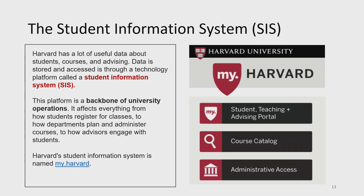The student information system — many of you might think about this as my.harvard — is where students go to do different registration operations. It's not just an interface for students, faculty, and staff; it also has a big data layer behind it, and that data layer is very valuable. It's not just some projects that I've worked on, but there's also been other projects that have benefited from the nice work that Hewitt has put into architecting the database backend for my.harvard.